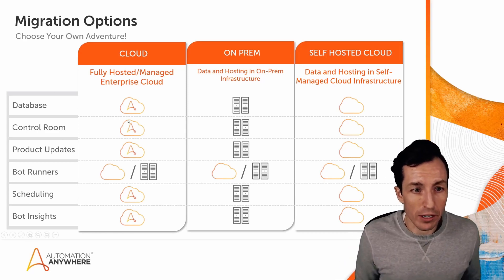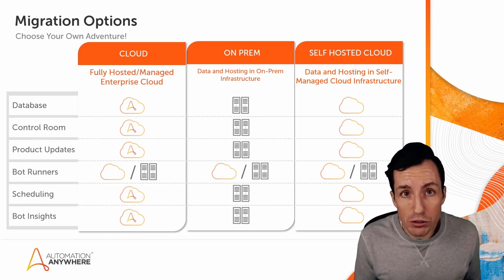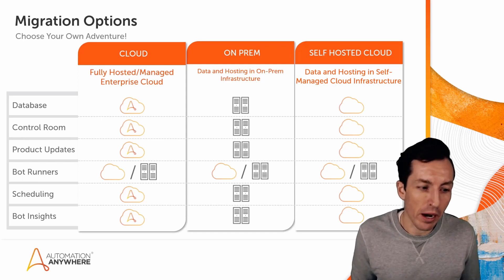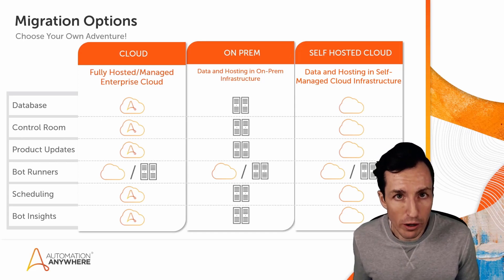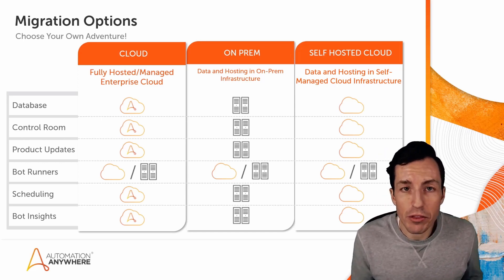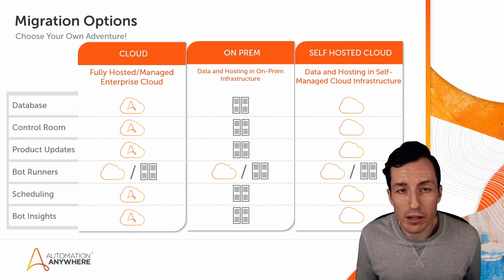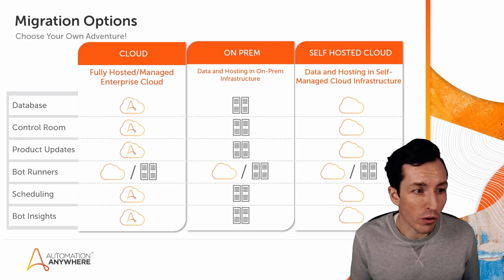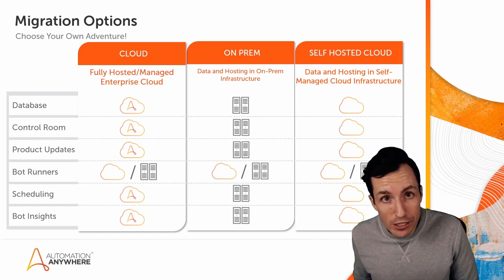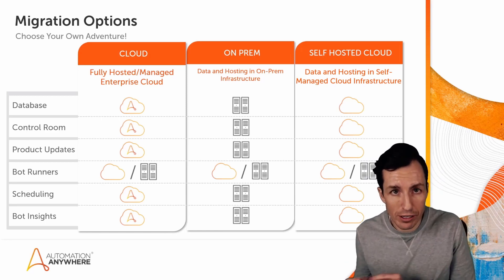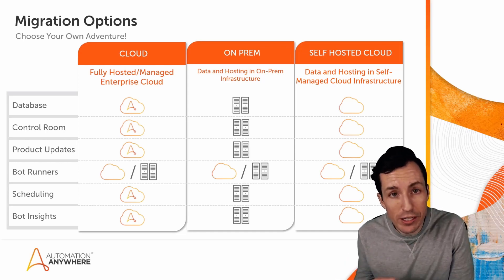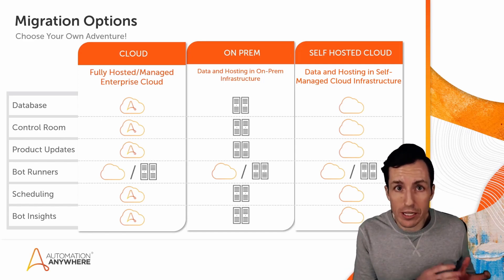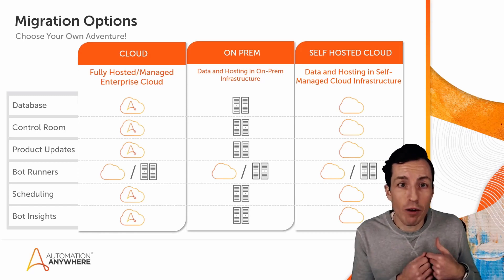In the far left column we have cloud — this is a fully hosted and managed enterprise cloud, fully hosted and managed by Automation Anywhere. The database, control room, product updates, scheduling, and Bot Insights are all running on Automation Anywhere hosted and managed cloud. Updates are taken care of automatically; they're pushed directly from Automation Anywhere, including your control room and database updates. When it comes time for updating your bot agent, that also pushes and updates directly from your control room — which is a big change from v11.